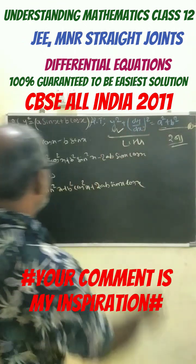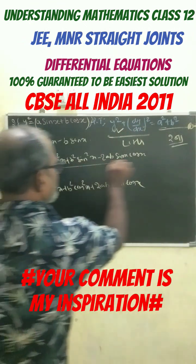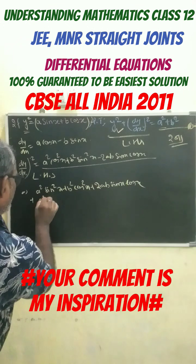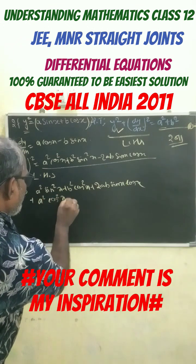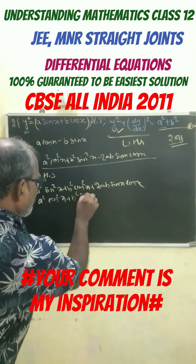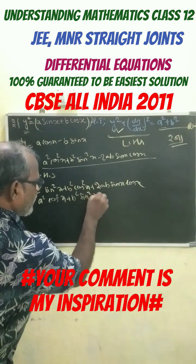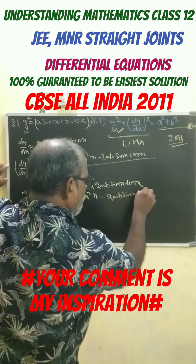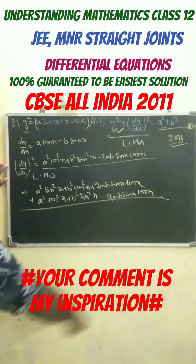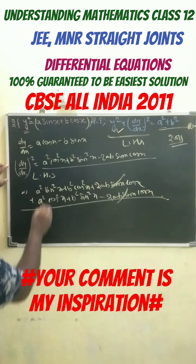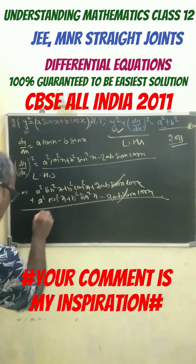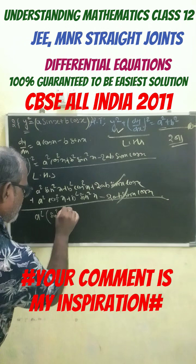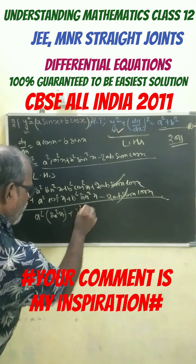Then dy by dx whole squared, we can write this. So, plus a squared cos squared x plus b squared sin squared x minus 2ab sin x cos x. The 2ab sin x cos x terms get cancelled off. From this, we get a squared as a common factor with sin squared x, and b squared as a common factor.